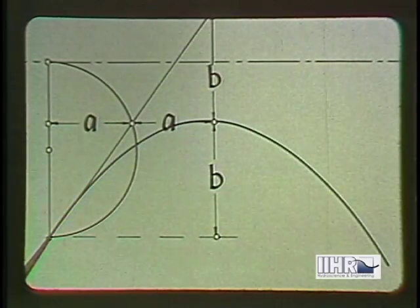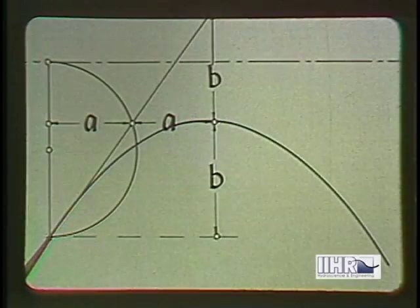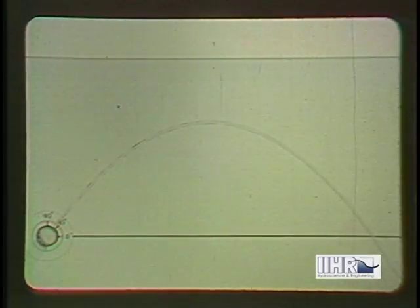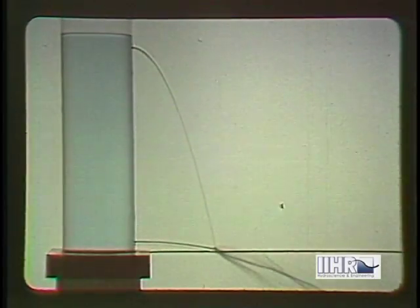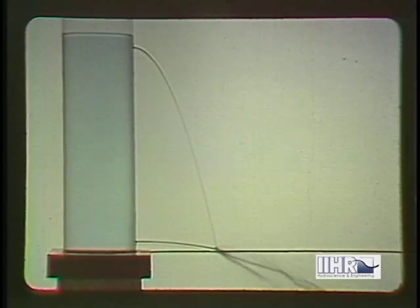Evidently, the maximum length of trajectory is attained at 45 degrees, when horizontal and vertical components are initially equal. It follows that jets from orifices in the side of a tank, equidistant from top and bottom, will intersect the bottom line at the same point. And hence, that an orifice at mid-height will produce a jet with the greatest horizontal throw.